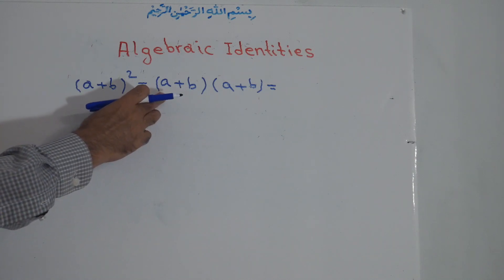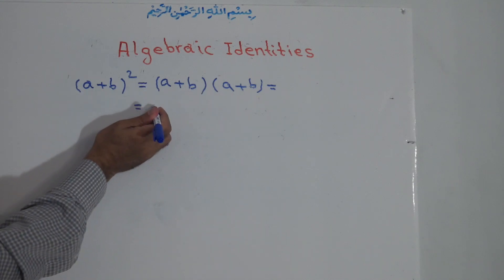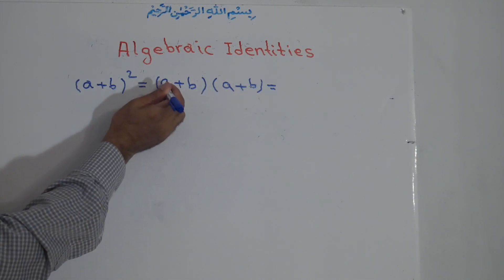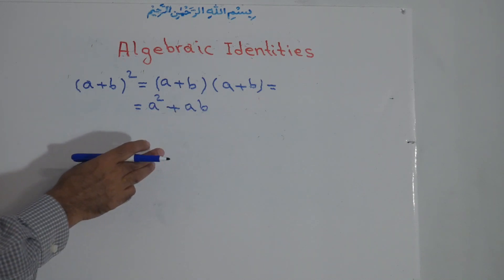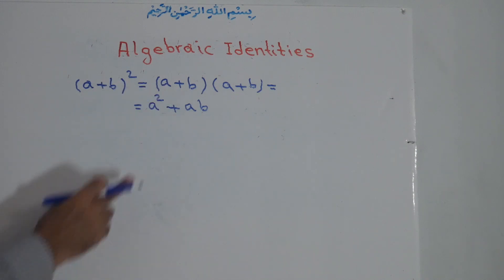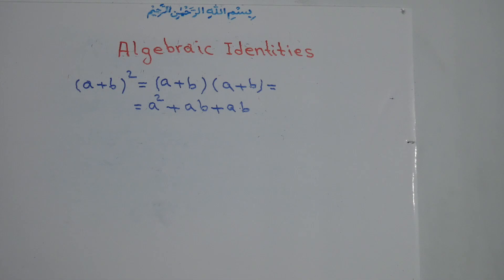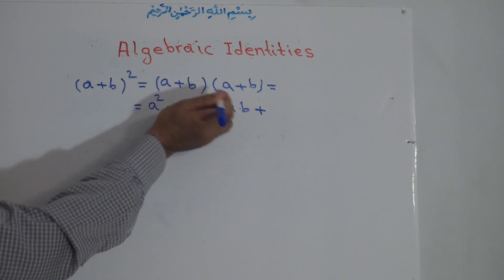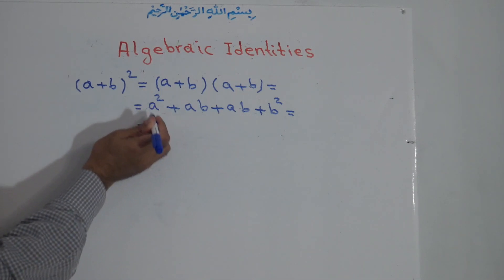What we do is we first multiply the first term of this binomial with both terms of the other. A times a is equal to a to the power of 2, because in multiplication we add powers: 1 plus 1 equals 2. Then positive times positive is positive, so a times b is ab. For the second term, b times a equals ab. We write a first, then b, since positive times positive gives b times b equals b squared, or b to the power of 2.